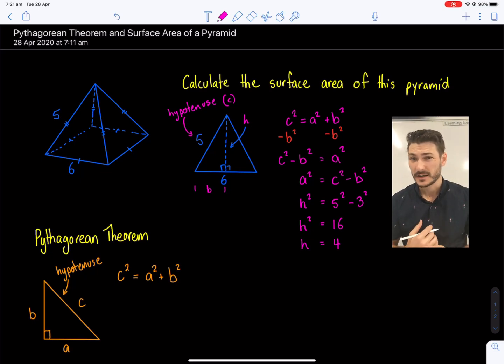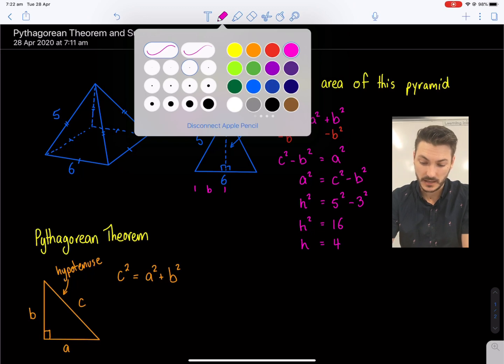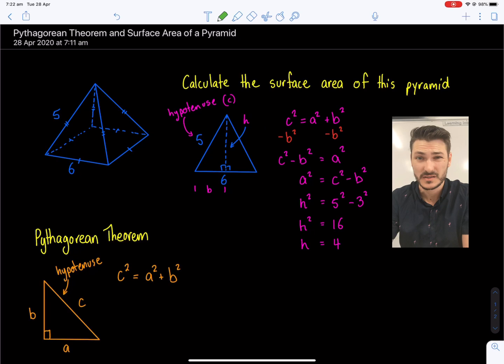So we found the height of our triangle. Now when it comes to calculating the surface area of this pyramid, it should be pretty straightforward. We know we have four of these triangles and one square base. So to calculate the surface area, I'm going to use a different color, maybe green to do this calculation.